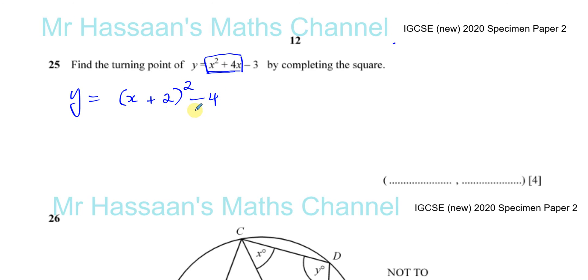So now this is exactly what's boxed here. If I expand this, I get x squared plus 4x plus 4 minus 4, which is x squared plus 4x. But there's a minus 3 at the end, which I have to write. So you have y equals x plus 2 squared minus 7.